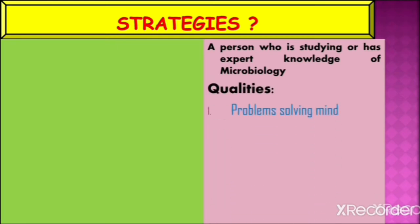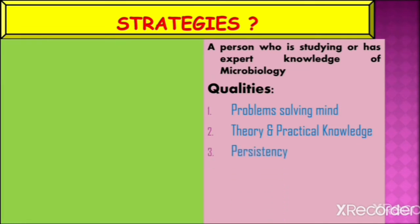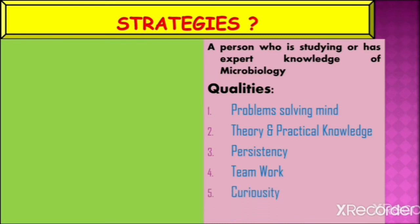That scientist should have the following qualities: he should have a problem-solving mind during his research, theory and practical knowledge about microbiology research, persistency, teamwork ability, and curiosity about microorganisms.